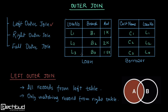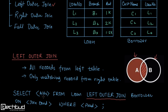In left outer join, we will have all the records from the left table but only the matching records from the right table. Using a Venn diagram — if this is relation one and this is relation two — when we perform left outer join we will have all the records from A but only the matching records from B. So we take the matching records as we did in inner join, and additionally we take all the records from A which are not matching with B. The syntax is: SELECT attributes FROM loan LEFT OUTER JOIN borrower.